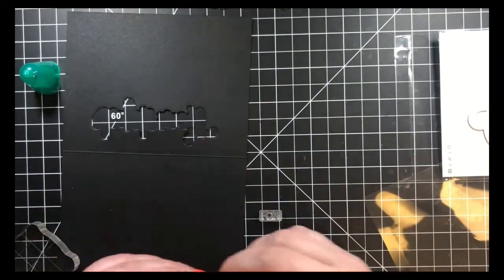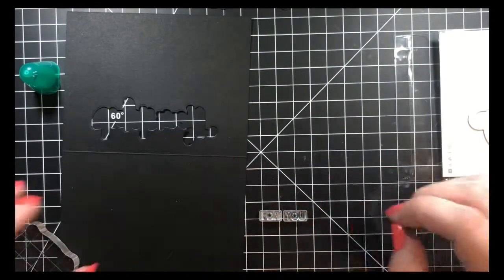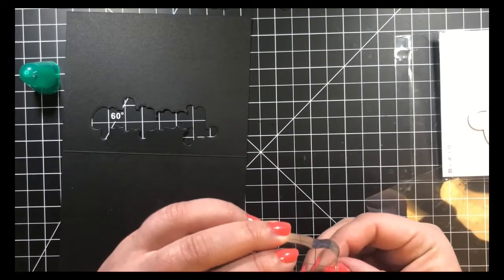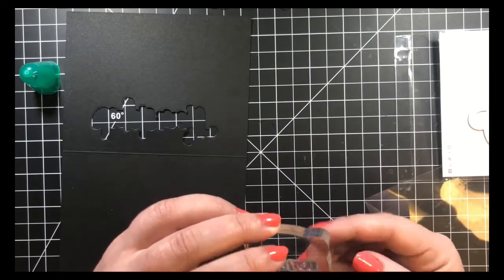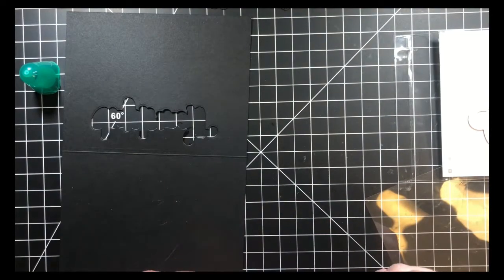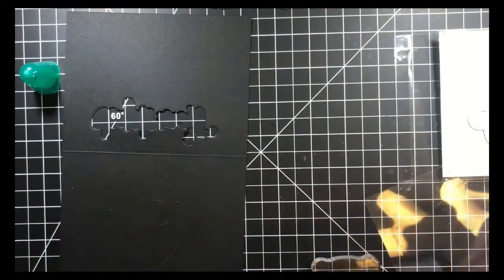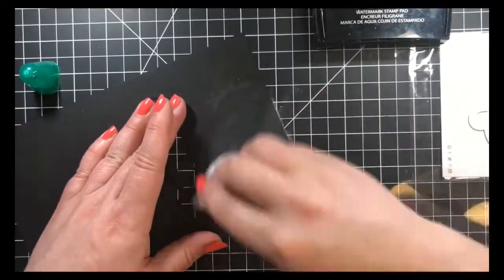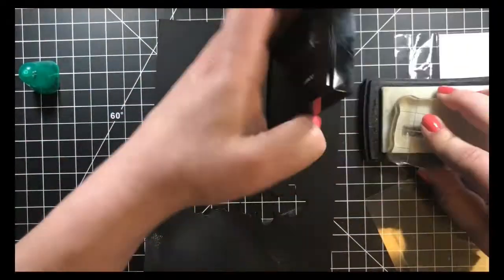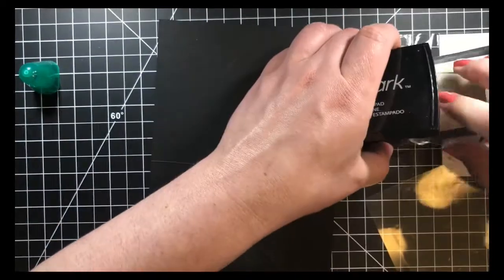Make sure that you do treat your cardstock with an anti-static tool, especially if you're using black or very dark cardstock and white embossing powder. Any stray embossing powder is really going to show on darker cardstock. I'm just using my Versamark pad here and going to go ahead and stamp that down.